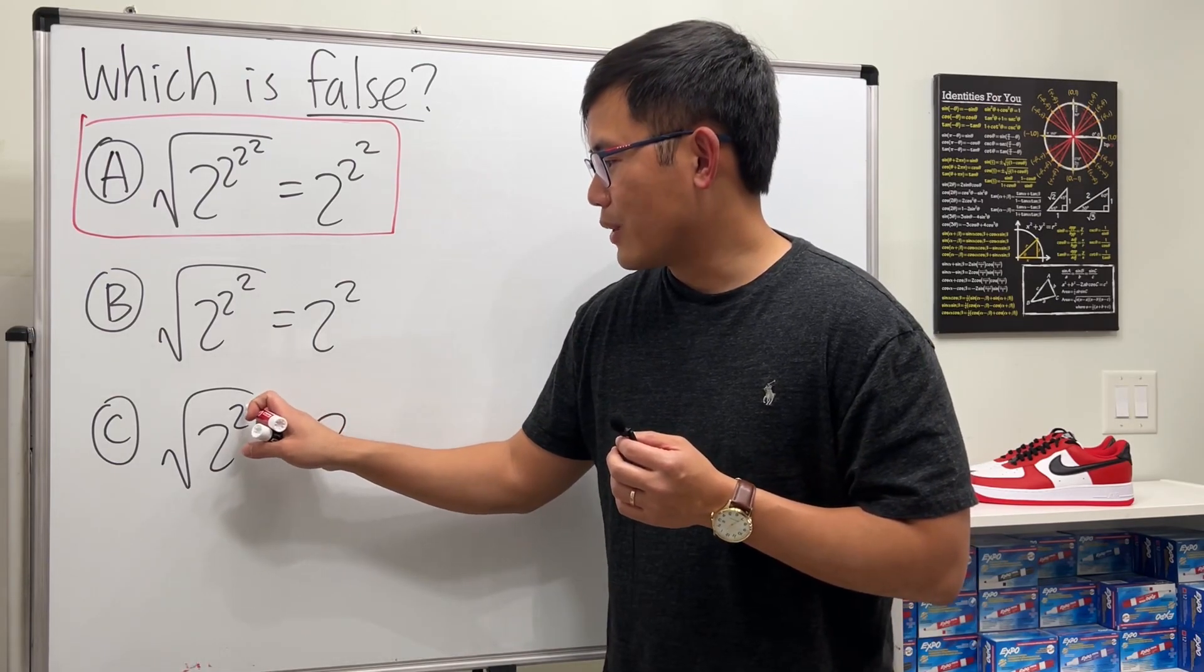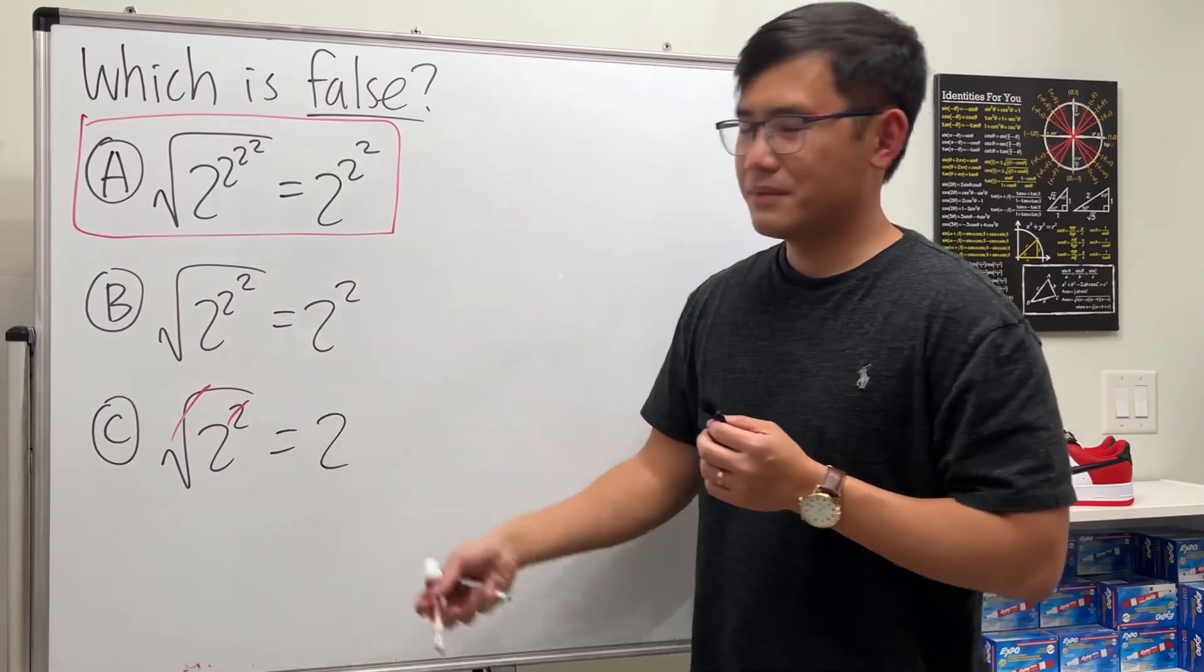And of course, you can just cancel the square and the square root. That's it, done.